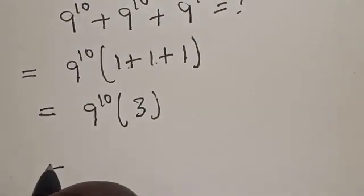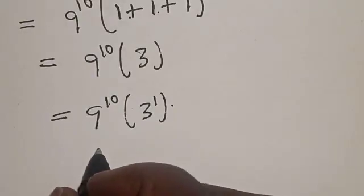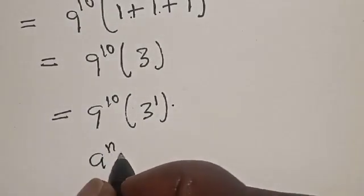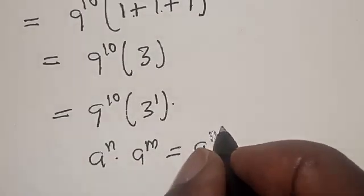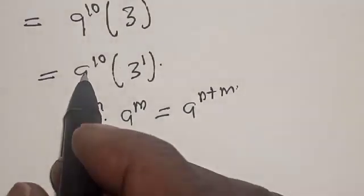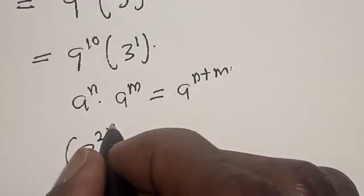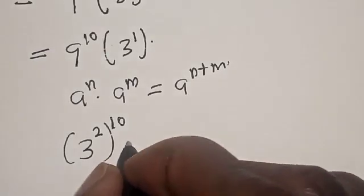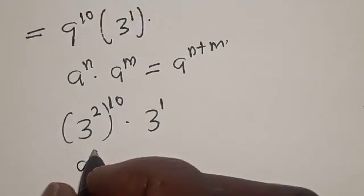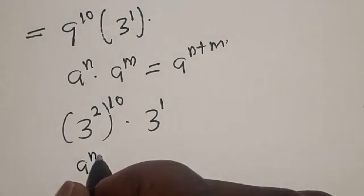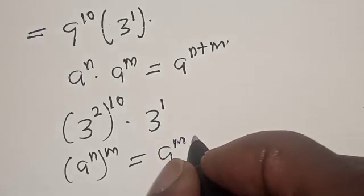Then, this is equal to 9 raised to power 10 into 3 raised to power 1. Now remember this rule: if you have a raised to power n raised to power m, this is equal to a raised to power mn. Also, 9 raised to power 10 is the same thing as 3 squared raised to power 10, multiplied by 3 raised to power 1.